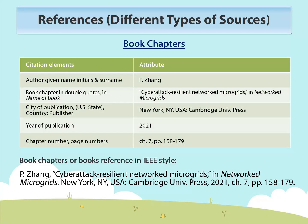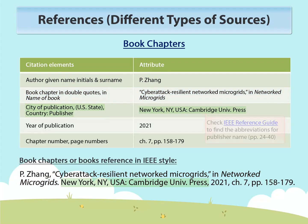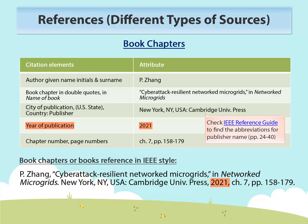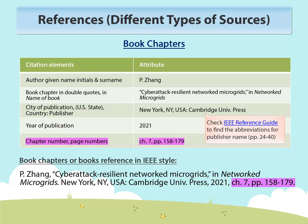The basic elements of a book chapter reference include author name, book chapter title and book title, publisher information, year of publication, chapter number and page number.